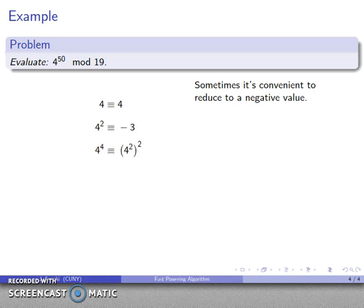4 to the 4th. 4 squared squared. That's negative 3 squared. That's 9. 4 to the 8th is 81. And again, I can work with, I'll knock that down by the modulus to 5.